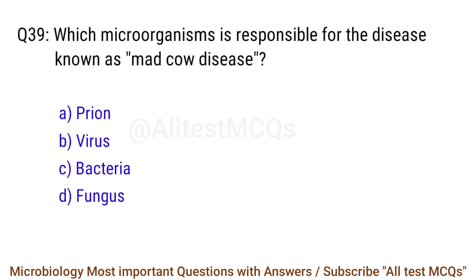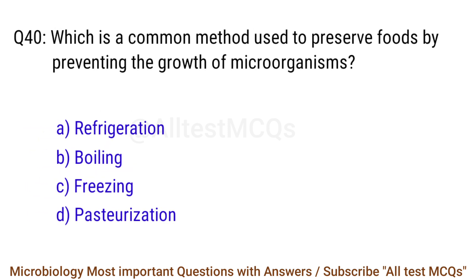Q39. Which microorganism is responsible for the disease known as mad cow disease? The correct answer is option A: Prion. Q40. Which is a common method used to preserve foods by preventing the growth of microorganisms? The right answer is option D: Pasteurization.